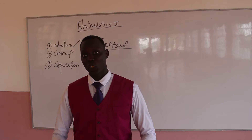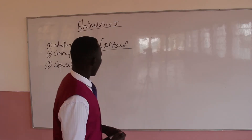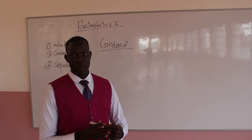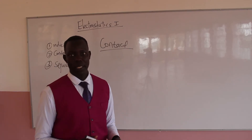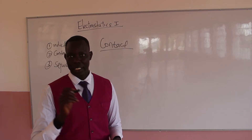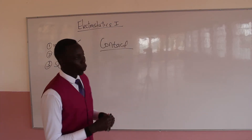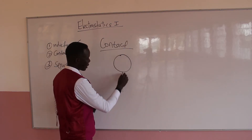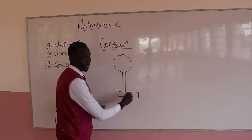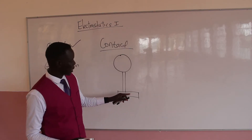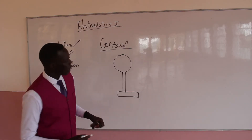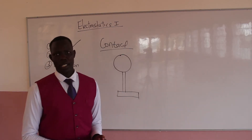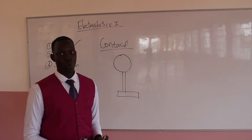Using a charged rod. Today, conduction is whereby there is a touch between the material to be charged and the charging rod. What we are charging is always the polystyrene board, and it is always placed on insulated stands. These stands should be insulated. Before we charge this material, it has equal numbers of positive and negative charges.